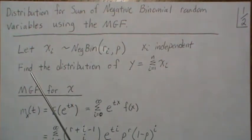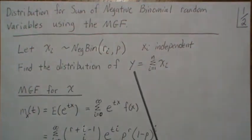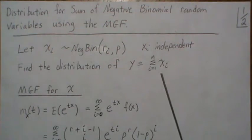Xi are independent and our goal is to find the distribution of Y which is the sum of these independent negative binomial random variables.